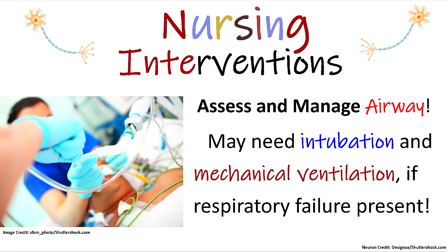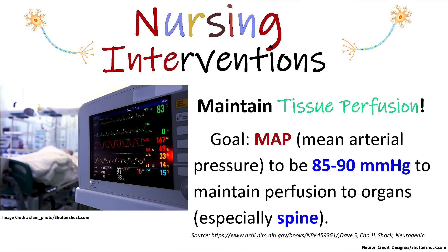We also need to assess and manage the airway, which can be affected depending on the location of the injury. The patient may need intubation and mechanical ventilation if respiratory failure is present. Because our patient is in shock, we want to maintain tissue perfusion and circulation. For patients with spinal injuries, we want to ensure the spine is being perfused along with other organs. The goal is to maintain the MAP — mean arterial pressure — between 85 to 90 millimeters of mercury.